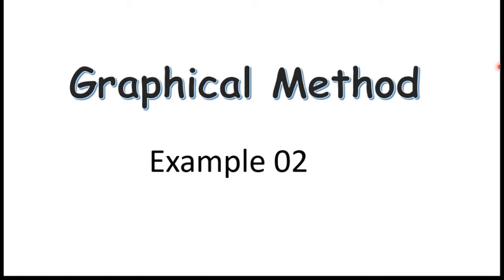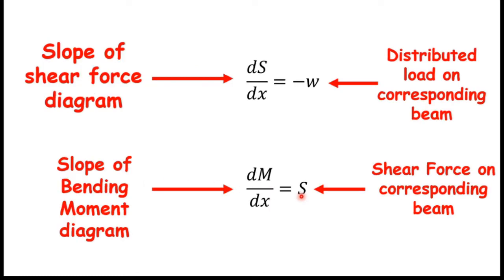Hello everyone. In this video I am going to show you how to draw shear force and bending moment diagrams using graphical method, and this is Example 2. These are the notations. First of all you have to know what are the meanings of these notations. So first, dS over dx equals minus w. dS over dx means slope of shear force diagram, and w means distributed load on the corresponding beam.